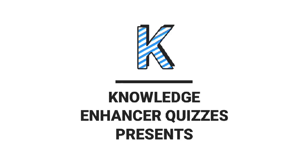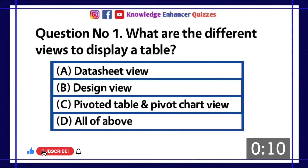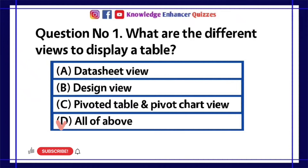Knowledge Enhancer Quizzes presents MS Access Quiz One. Question number one: What are the different views to display a table? A) Datasheet view, B) Design view, C) Pivot table and pivot chart view, D) All of the above. Option D is the right answer.